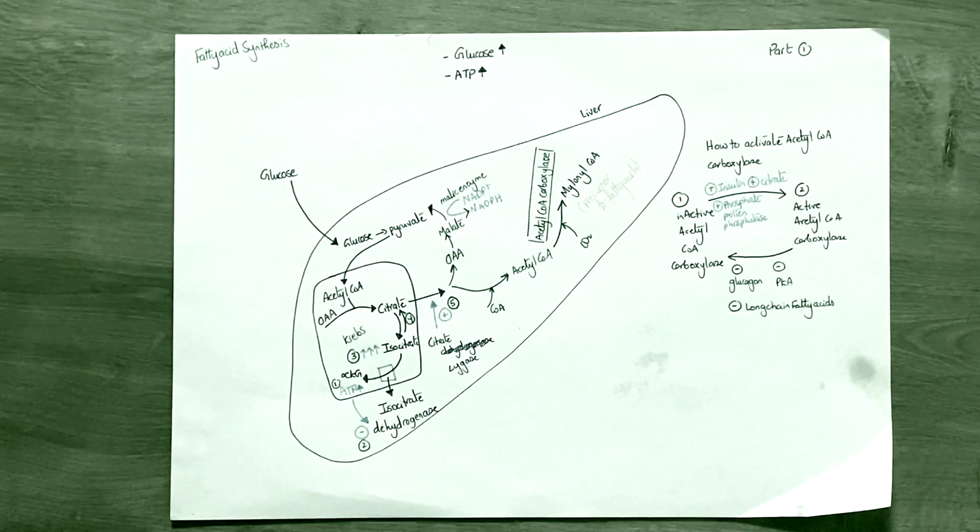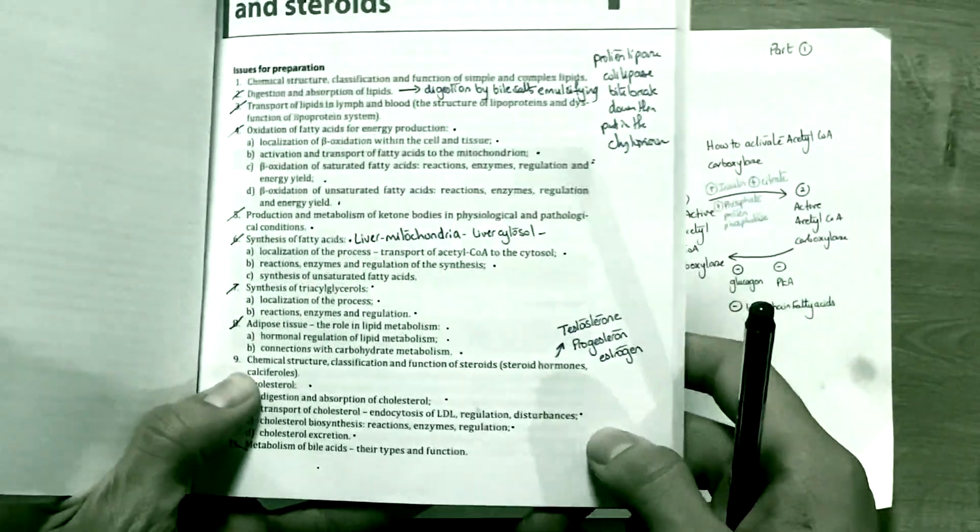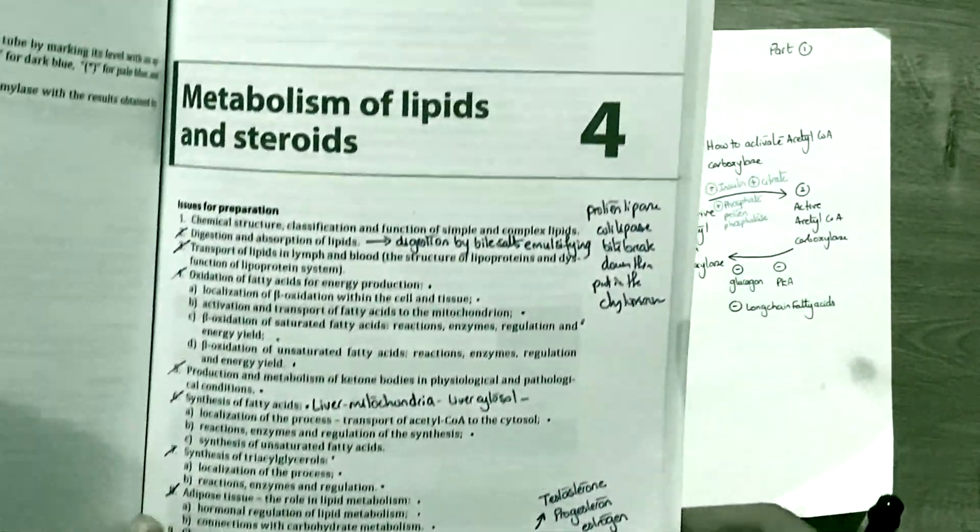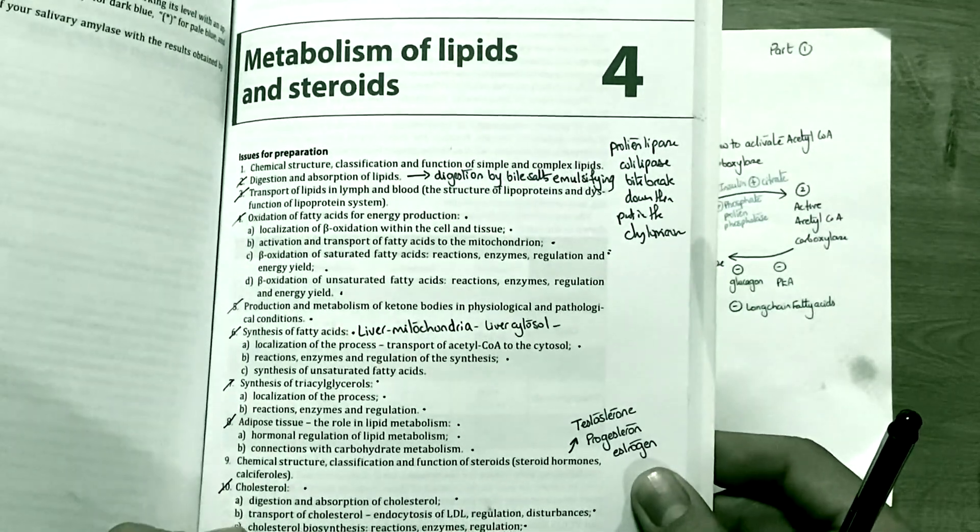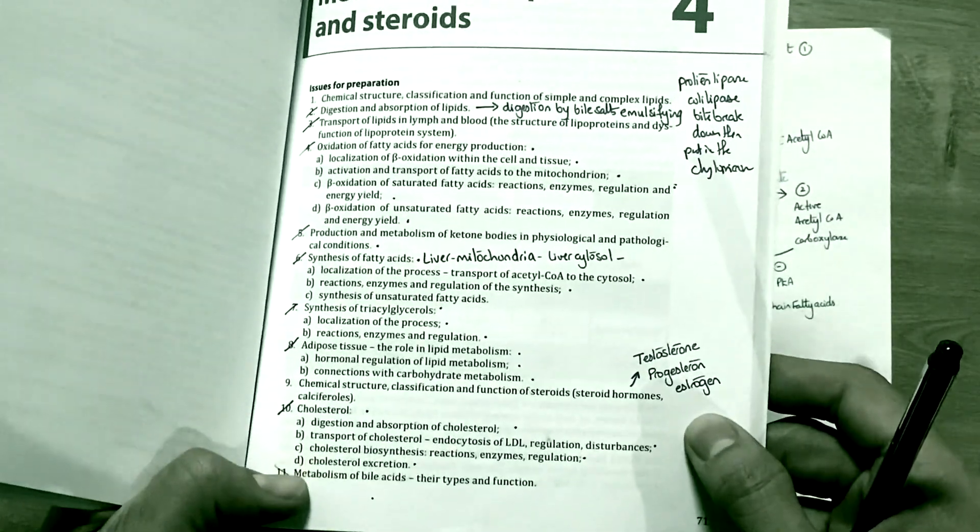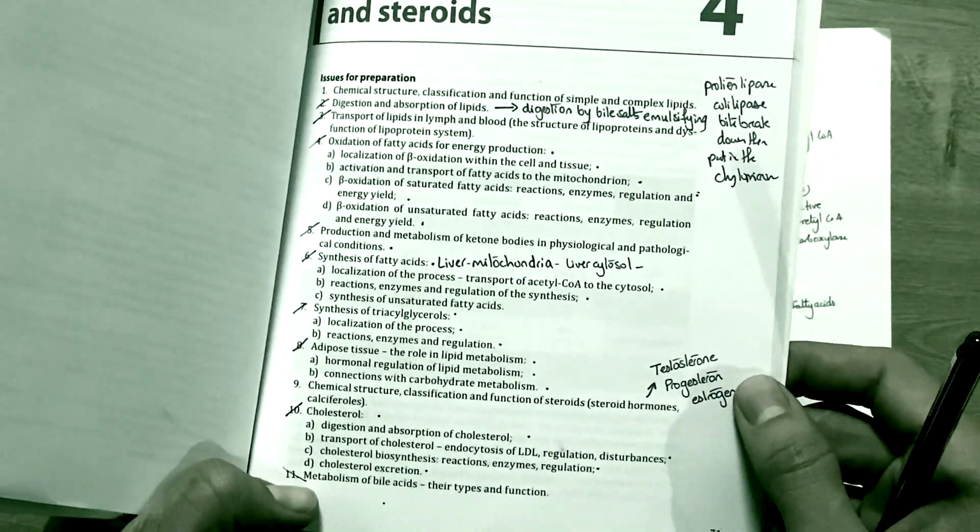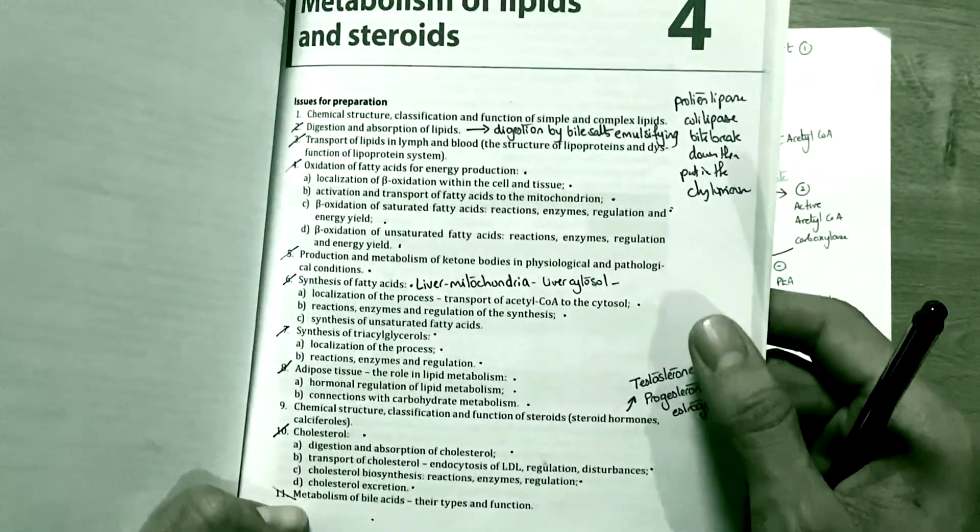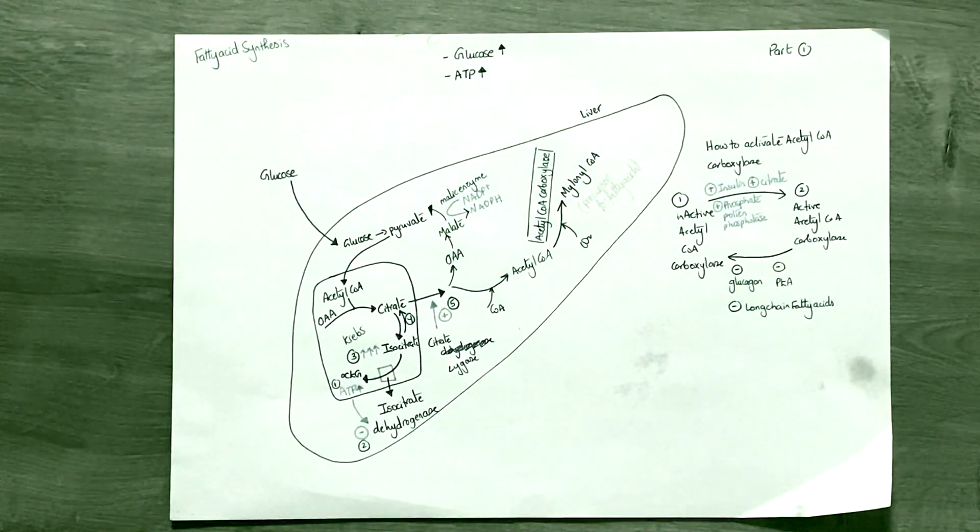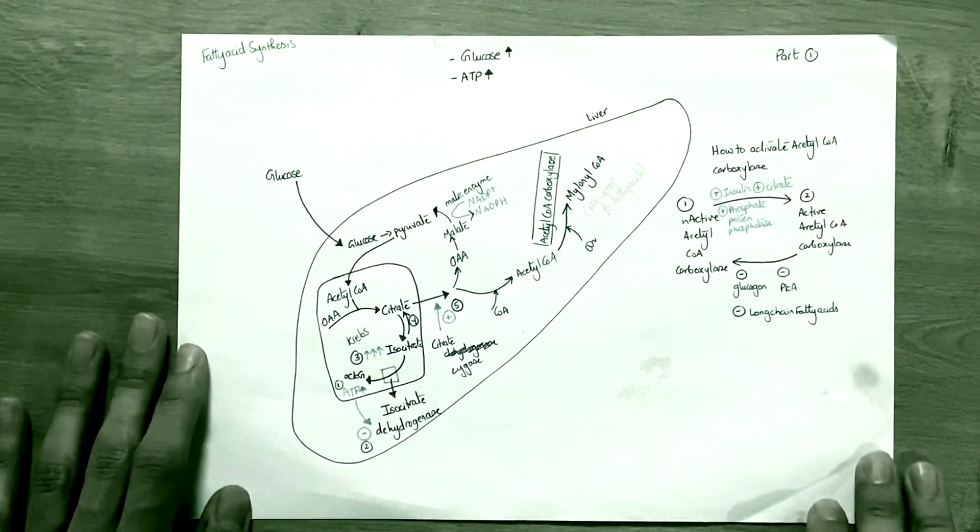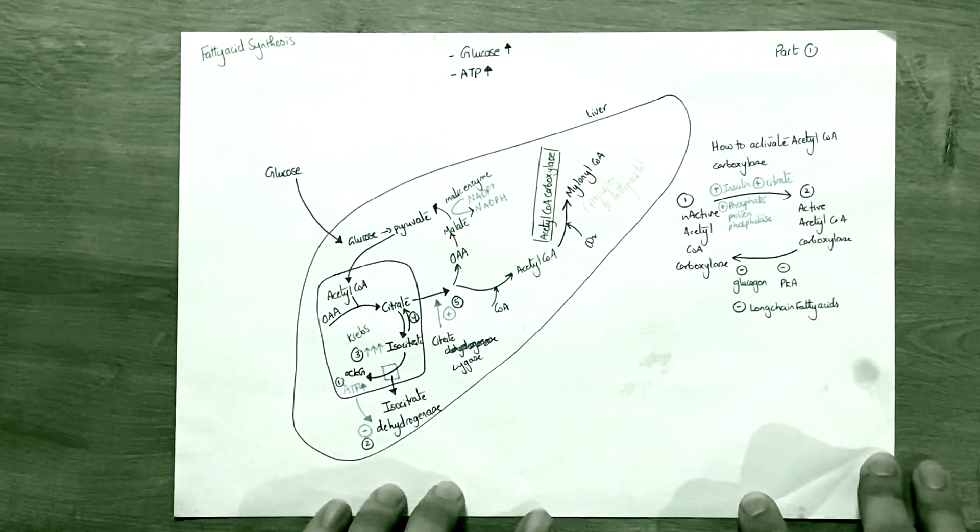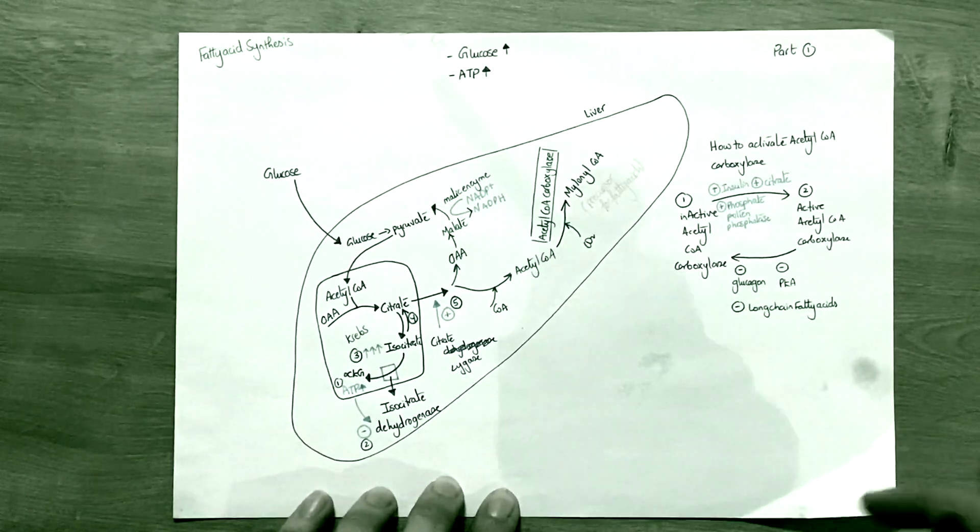For this exam we are required to know the contents related to lipids and steroids, which you'll find on page 71 in the lab book. There are mainly 11 points and I'll try my best to cover as much as I can from what we have taken. I wish everybody good luck and I hope this is quick and easy to understand.